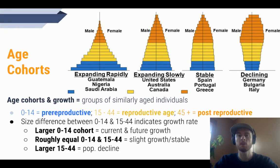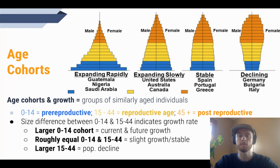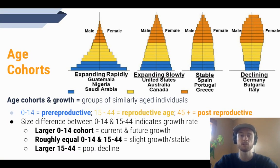Now we'll talk about age cohorts. The number one mistake that AP Environmental Science students of the past have made when it comes to age structure diagrams is they've just memorized what the basic shapes mean, and haven't been able to explain why and how different shapes of an age diagram can tell us about their growth rate. So we need to understand age cohorts instead of just memorizing the shapes. An age cohort is just a group of individuals all born within the same four to five year range, meaning they're roughly in the same age group.